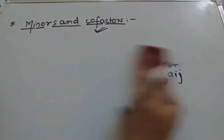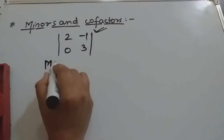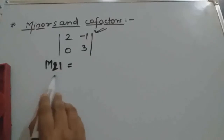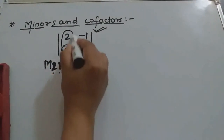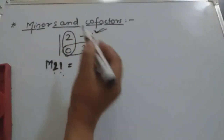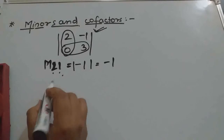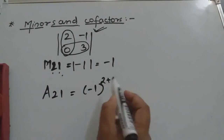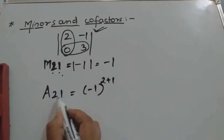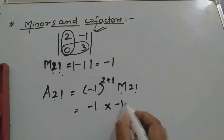For the 2×2 matrix [2, -1; 0, 3], let's find M21. M21 means we delete the second row and first column. After deleting, we get the determinant of (-1), so M21 = -1. The cofactor A21 = (-1)^(2+1) × M21. Since 2+1=3, (-1)^3 = -1, and M21 = -1, so A21 = (-1)×(-1) = +1.